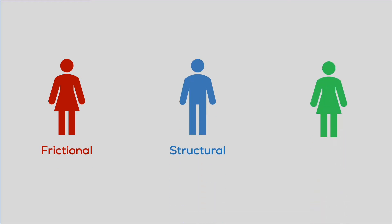The first type of unemployment is frictional unemployment. Second is structural unemployment, and then third is cyclical unemployment. So conditional on somebody being unemployed, these are the three types of unemployment that could occur.